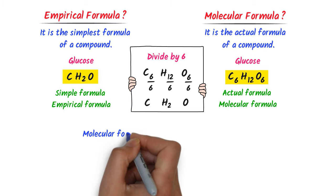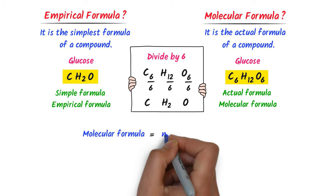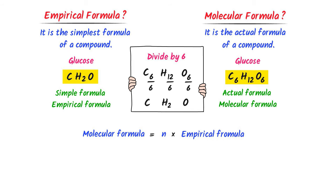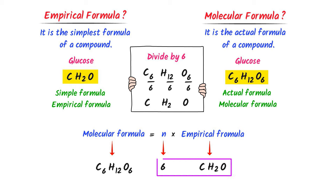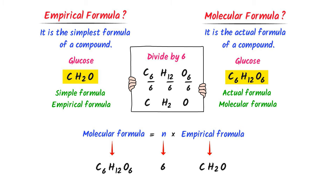Molecular formula is equal to n times the empirical formula. For example, the molecular formula of glucose is C6H12O6 while its empirical formula is CH2O. Here the value of n is 6 — if we multiply the subscripts of the empirical formula by 6, we get the molecular formula.